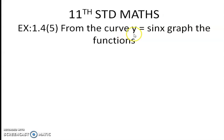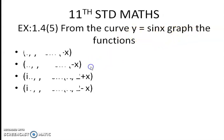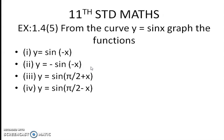Sum number 5. The curve y is equal to sin x. You have to graph the functions: y is equal to sin of minus x, y is equal to minus sin minus x, y is equal to sin pi by 2 minus x.